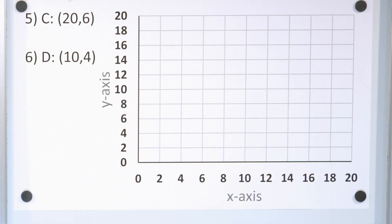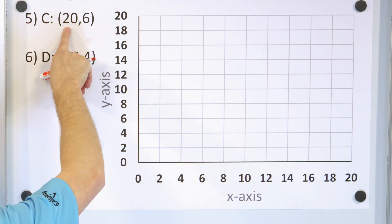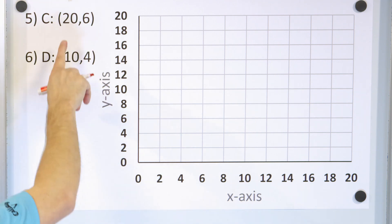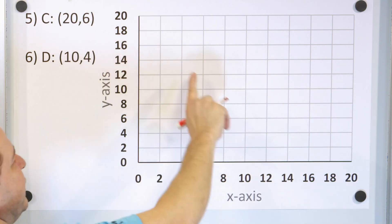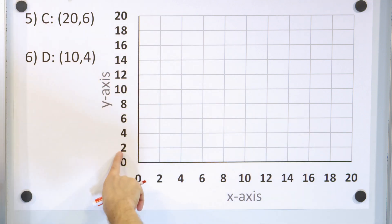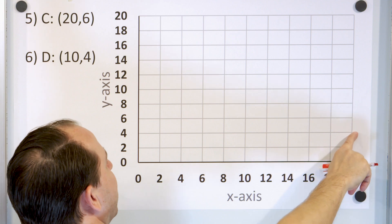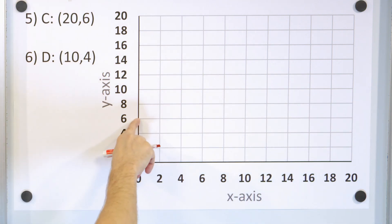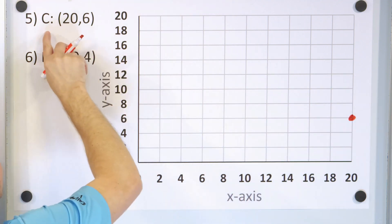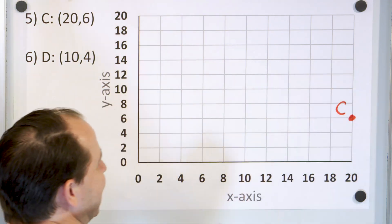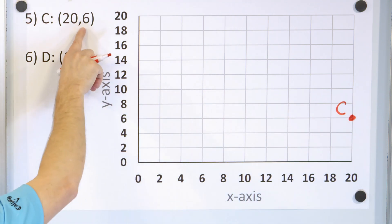Let's take a look at the next problem. We have point C at 20 comma 6. That means the x value is 20 — we go all the way to 20, which is over here. Then we go up 6 units. Notice the y-axis is going by 2, 4, 6, 8, so counting up it's 2, 4, 6. We go to y equals 6 and x equals 20, which means the point is here. The label for this point is point C.